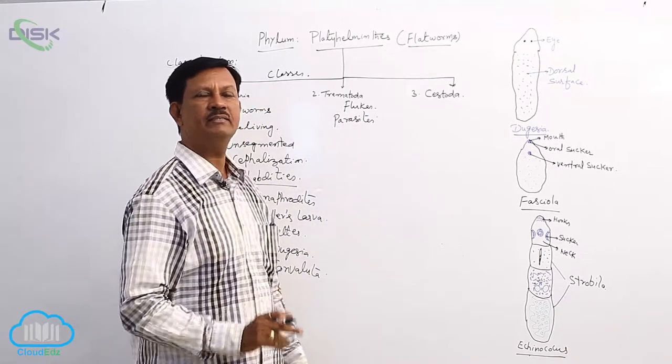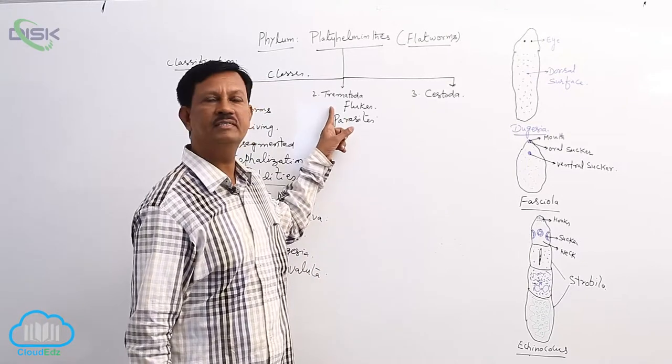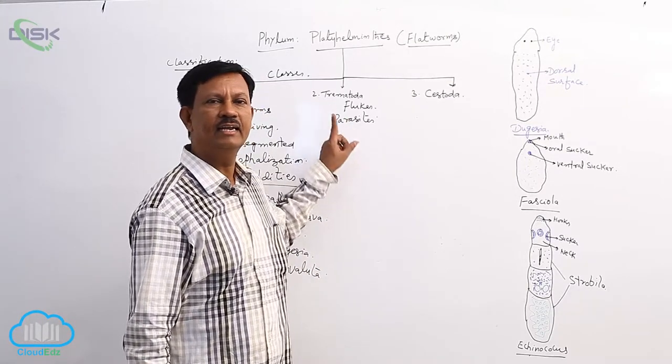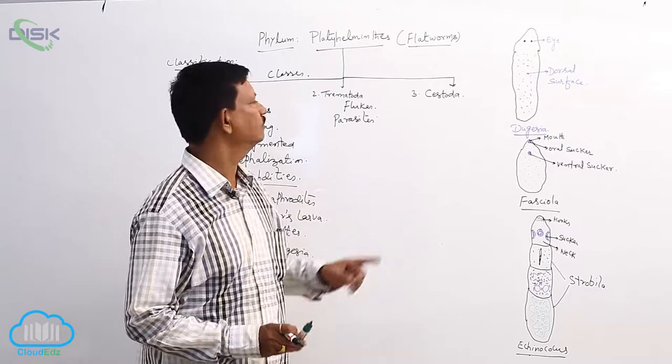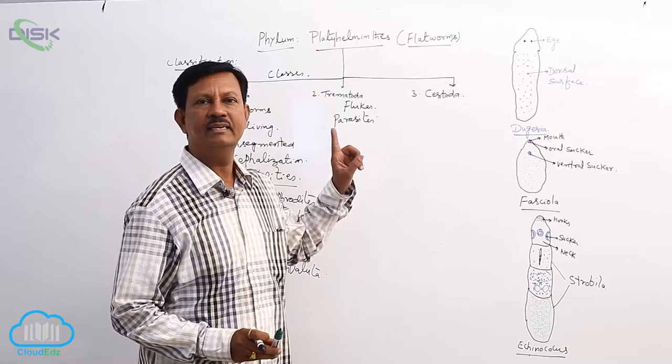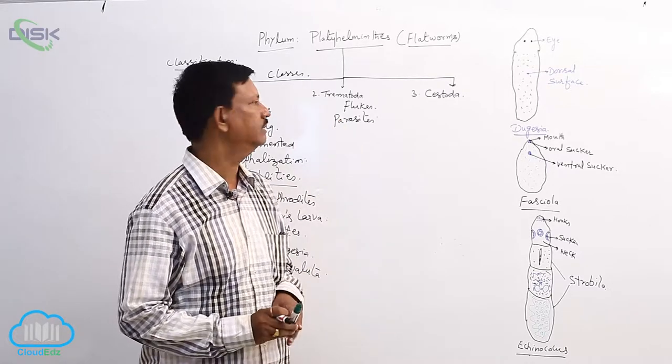Some are ectoparasites, some are endoparasites. Trematoda is divided into two orders, monogenia and digenia. In monogenia, parasites are present on the external surface of the host, they are known as ectoparasites. Digenia order contains the endoparasites, they are mostly found inside the body of the host.